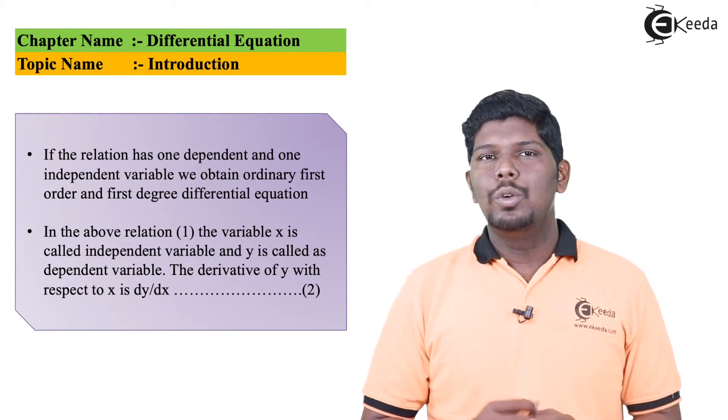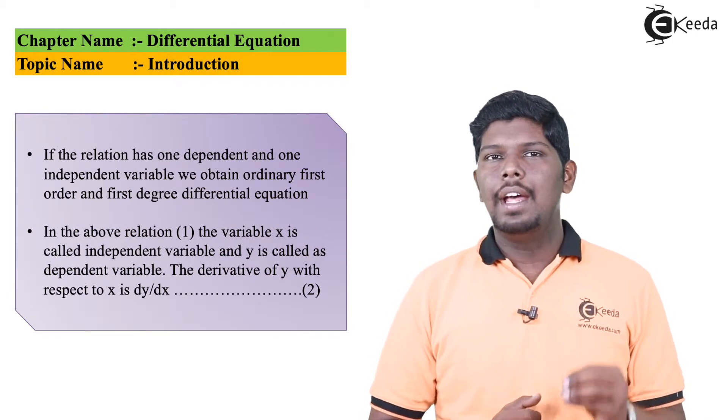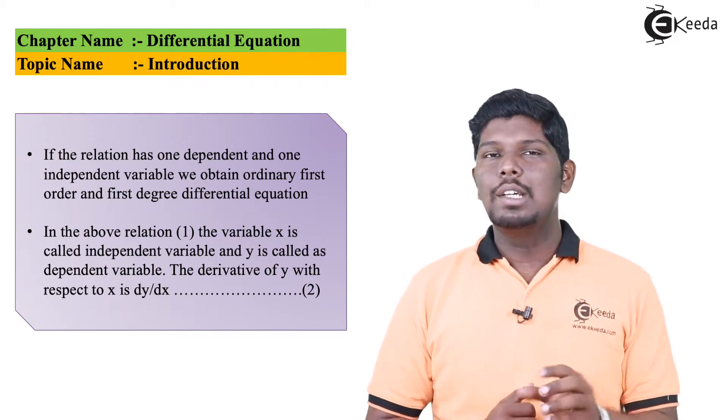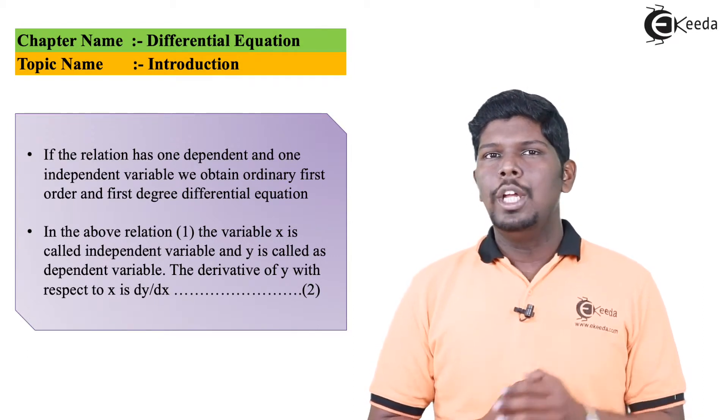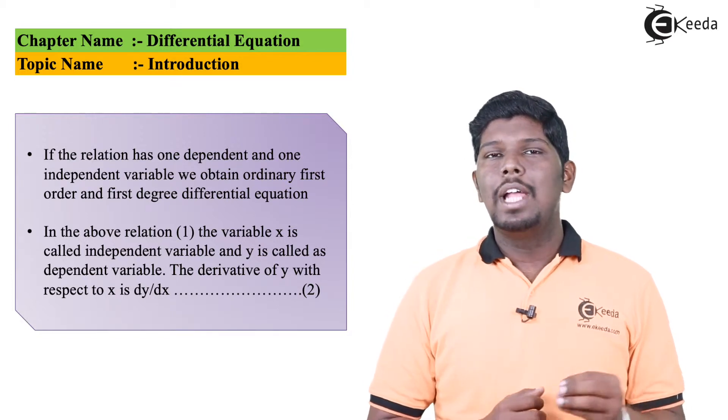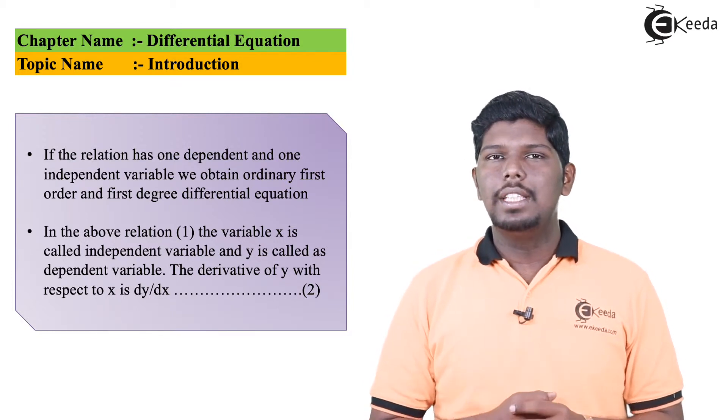In this relation, we have one dependent variable and another independent variable. As you can see, x is the independent variable and y is our dependent variable. So in order to get the first order first degree differential equation, we can differentiate the above function. After differentiating, the value that we are getting, dy/dx, is also called the derivative of dependent function with respect to independent function.